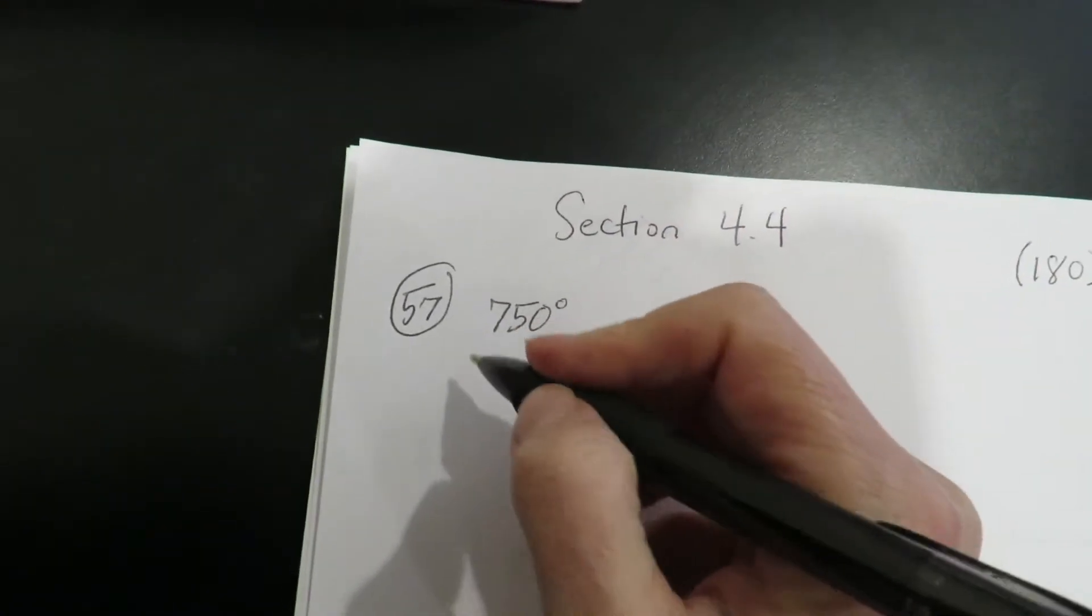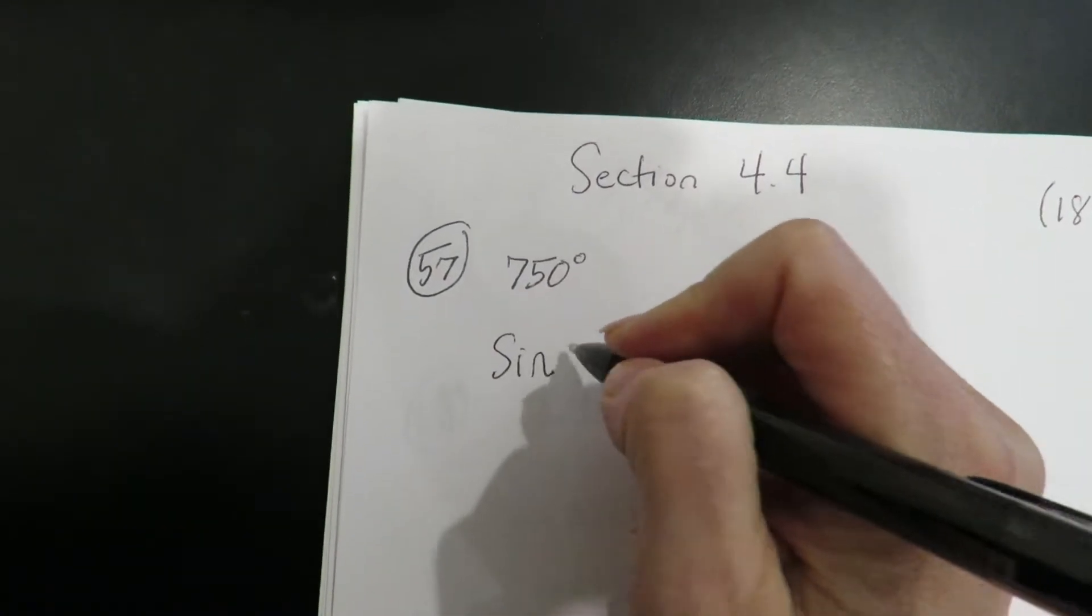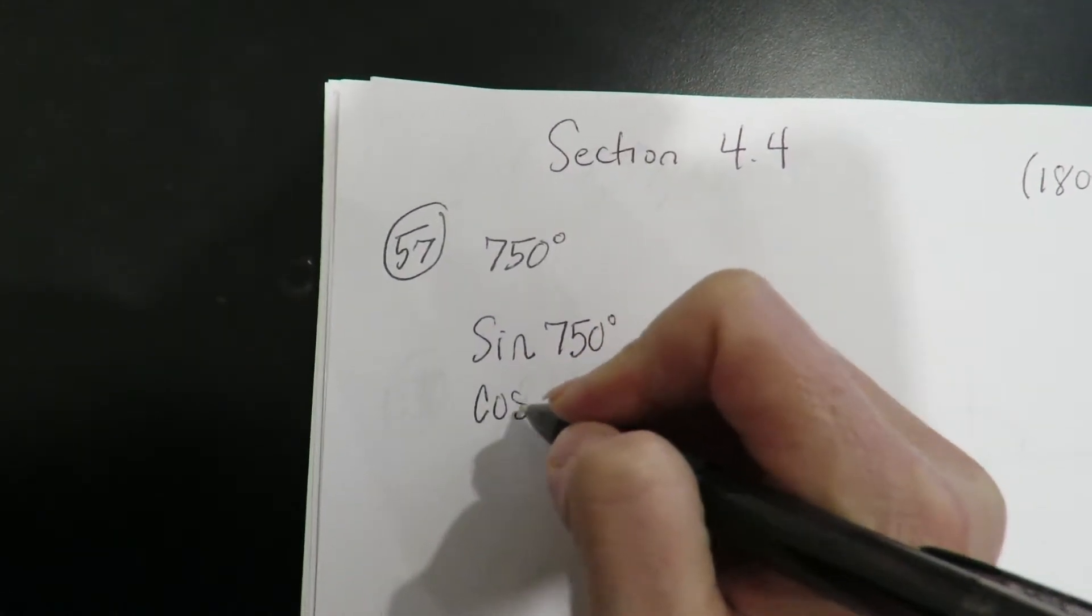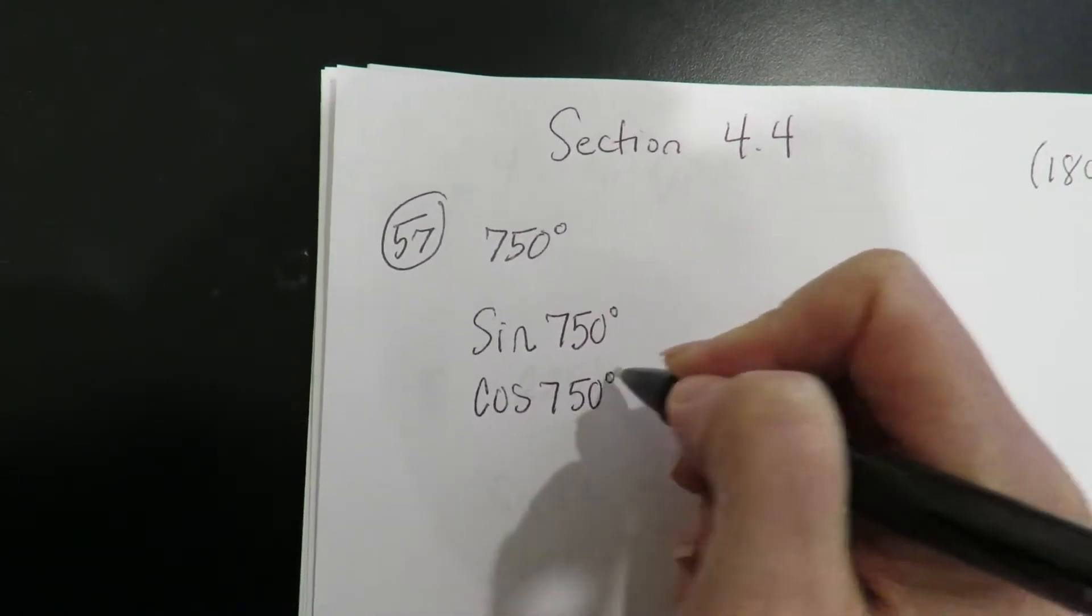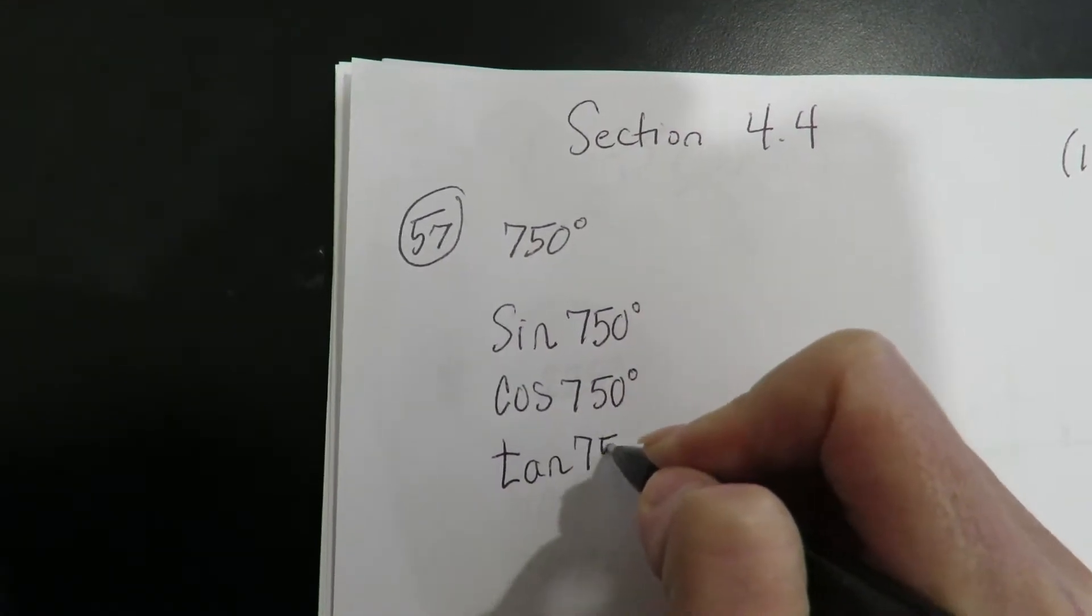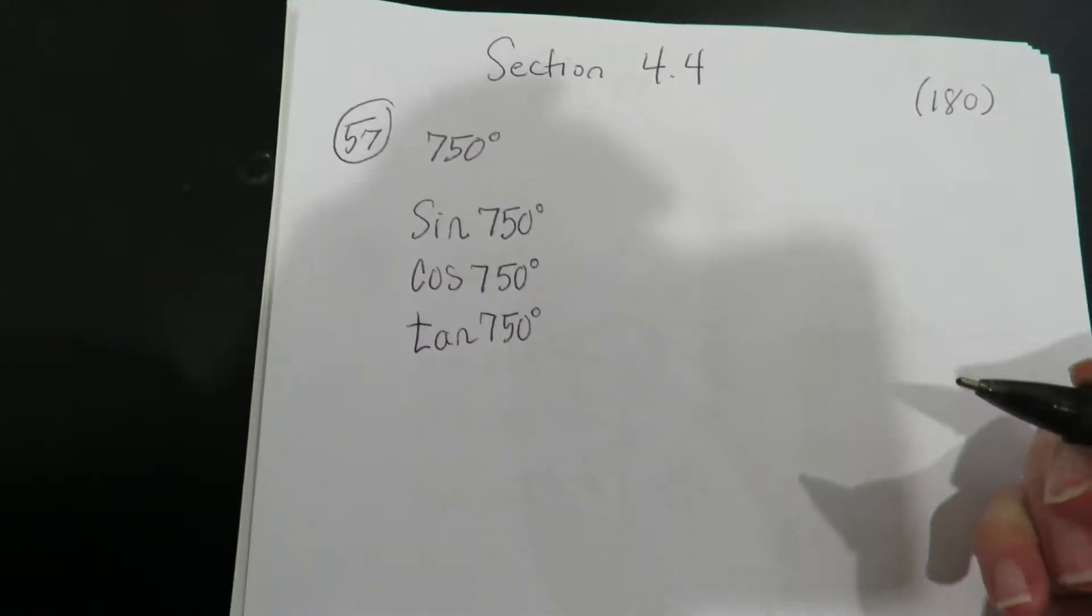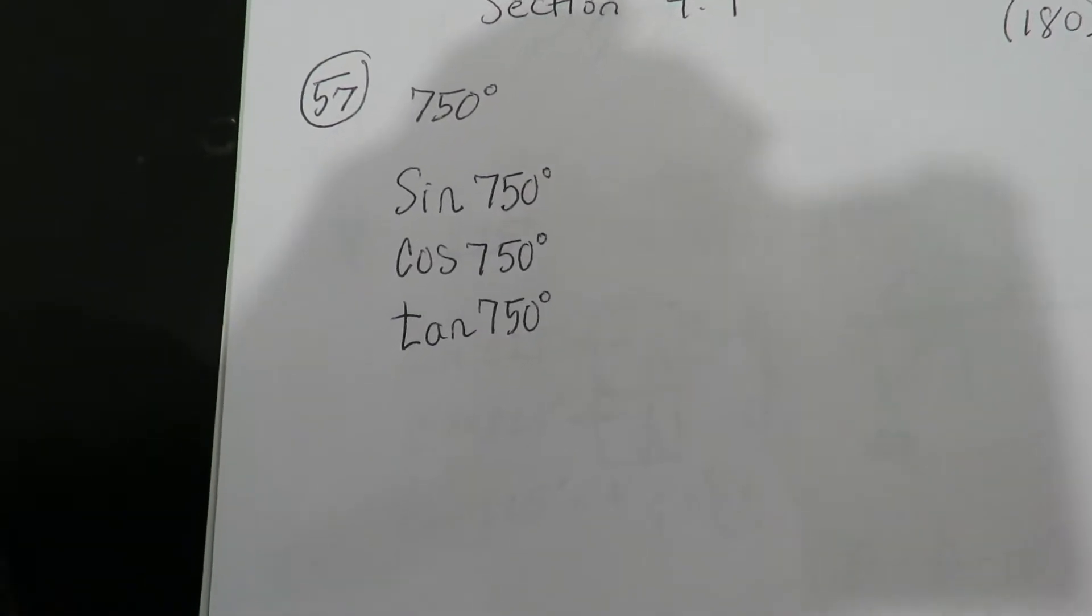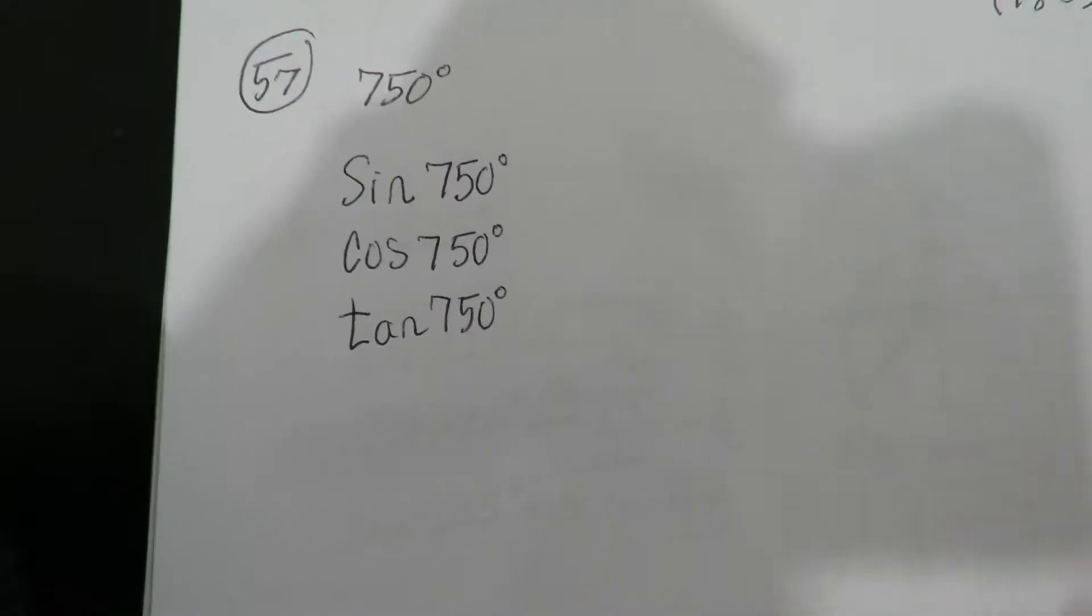We're now going to find the sine of 750, the cosine of 750, and the tangent of 750. So without a calculator, using our triangles and our unit circle, we're going to evaluate this without a calculator.